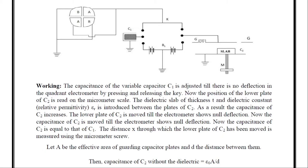In the initial adjustment we varied C1 to get null deflection. Now we have varied the distance between the lower plate and the guard ring of capacitor C2 to again make null deflection. Therefore we have capacitance C1 equal to capacitance C2. The distance x through which the lower plate of C2 has been moved is measured using the micrometer screw.